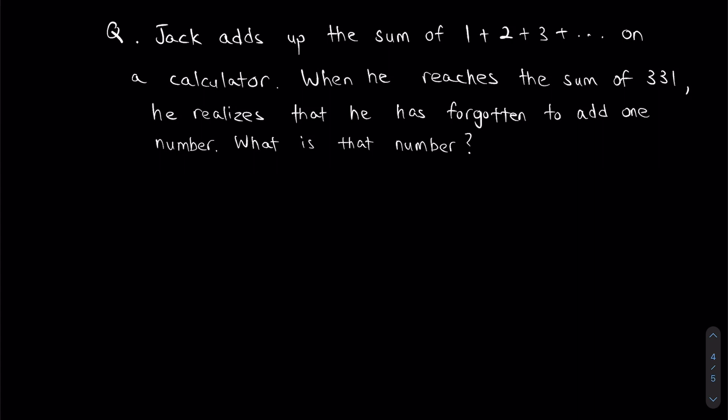Jack adds up the sum of 1 plus 2 plus 3 plus so on on a calculator. When he reaches the sum of 331, he realizes that he has forgotten to add one number. What is that number?